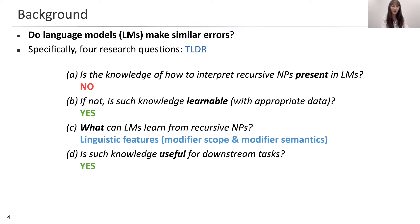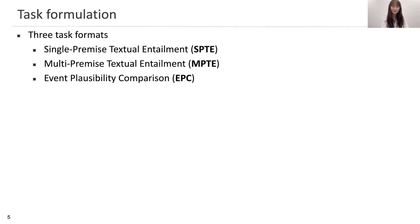If you're interested in how we found those answers, I invite you to continue watching. To address the understanding of recursive NPs, we designed three task formats: single-premise textual entailment, multi-premise textual entailment, and event plausibility comparison.